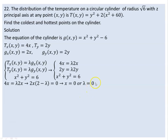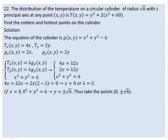This happens only if x equals 0 or lambda equals 2. If x equals 0, then from the cylinder equation 0 squared plus y squared equals 6, so y squared equals 6 and y equals plus or minus radical 6. This gives us two points to consider: (0, radical 6) and (0, negative radical 6).